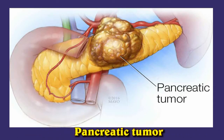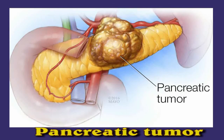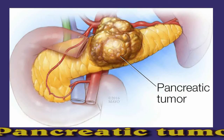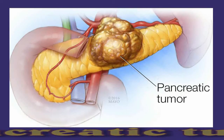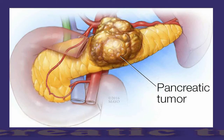Pancreatic tumor: pancreatic tumors are rare, but having one can lead to hypoglycemia. Tumors in the pancreas can cause the organ to produce too much insulin. If insulin levels are too high, blood sugar levels will drop.